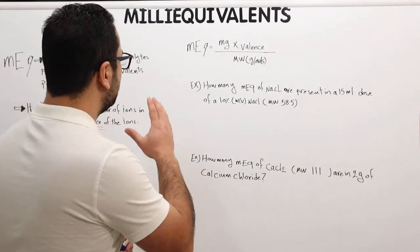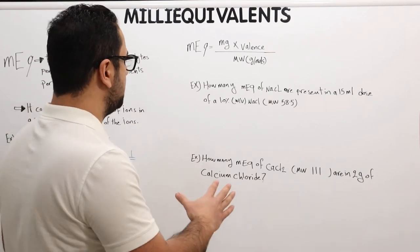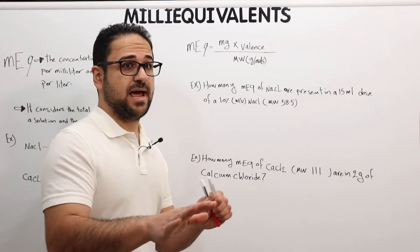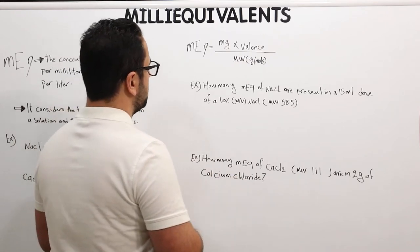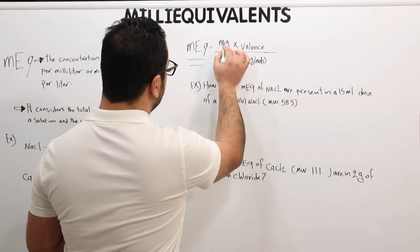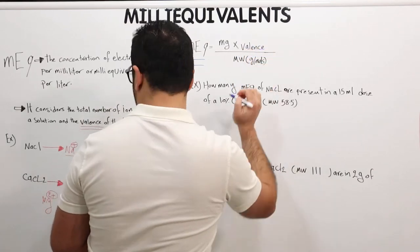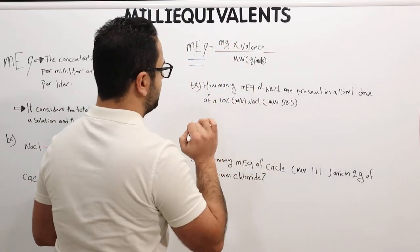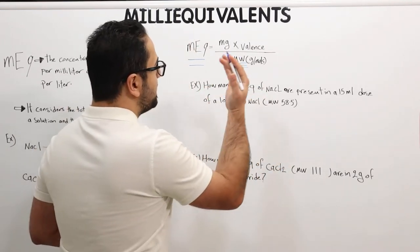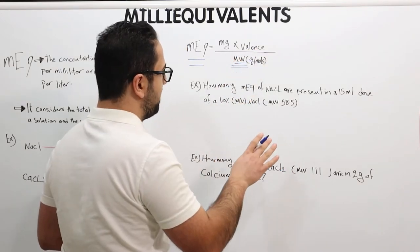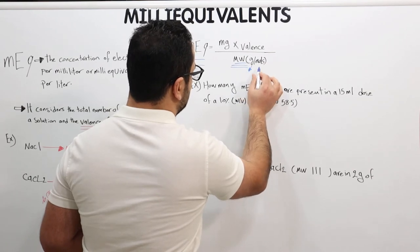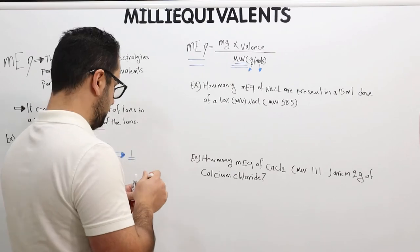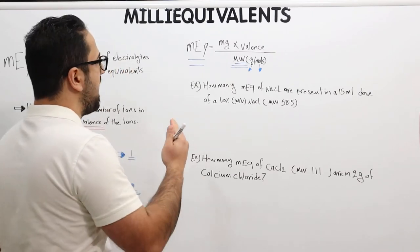Now let's move into the equation for milliequivalent and how to calculate milliequivalents for any question you may see on exams such as the NAPLEX. The equation is: milliequivalent = (milligrams of solute × valence number) / molecular weight of solute. If the molecular weight is not given directly, the question will give us grams and moles, from which we can calculate the molecular weight.